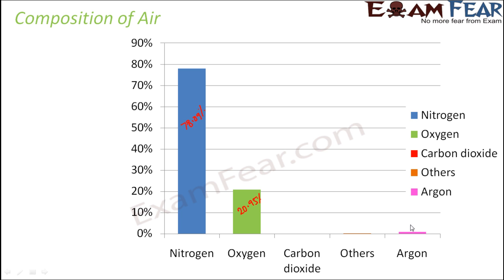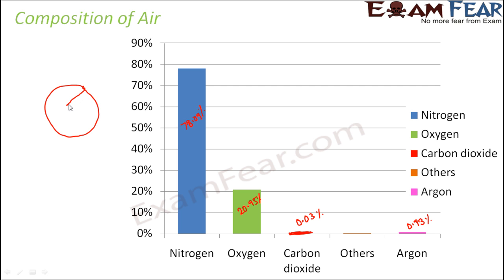Argon is present at 0.93% — less than 1% of air. Carbon dioxide is only 0.03% — not even 0.1%. The remaining amount — 0.00-something percent — is made up of all other gases in very minute amounts. So if you imagine a biscuit, 78.09% of it is nitrogen — that much of the biscuit is nitrogen.